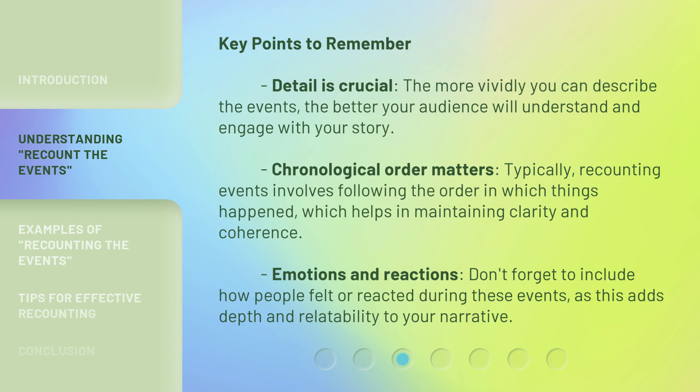Key points to remember. Detail is crucial — the more vividly you can describe the events, the better your audience will understand and engage with your story. Chronological order matters: typically, recounting events involves following the order in which things happened, which helps in maintaining clarity and coherence. Emotions and reactions: don't forget to include how people felt or reacted during these events, as this adds depth and relatability to your narrative.